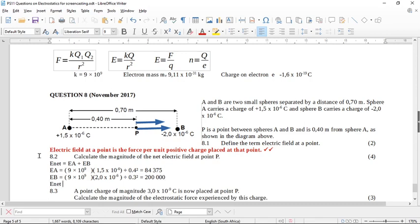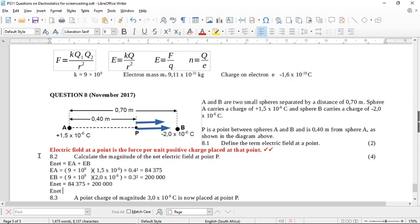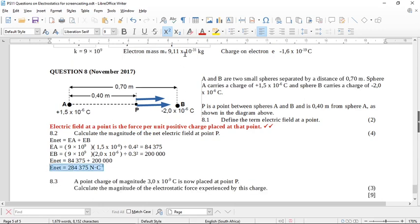So my E net is going to be 84375 plus 200,000. So then my E net is going to be 284375 Newtons per Coulomb. If you wanted to, you could round this off and put it in scientific notation, it would be 2.84 times 10 to the power of positive 5 Newtons per Coulomb. But that's how you find the net electrical field.